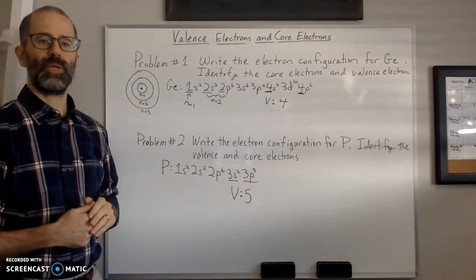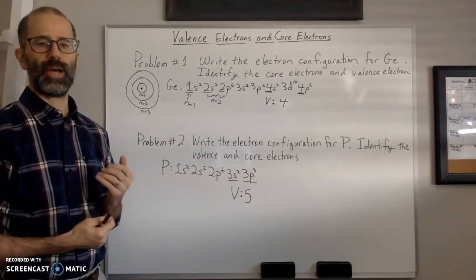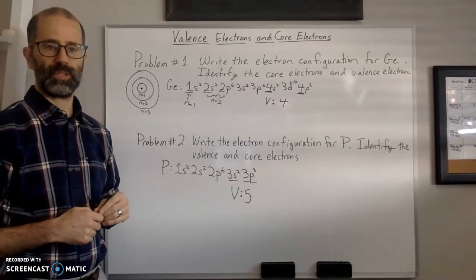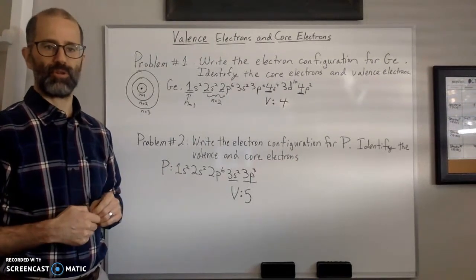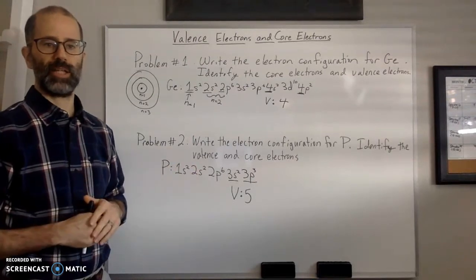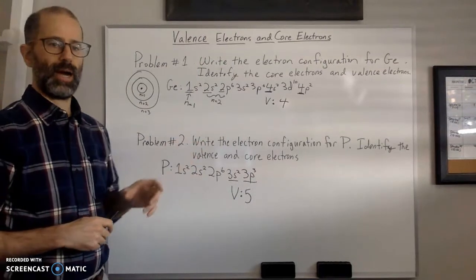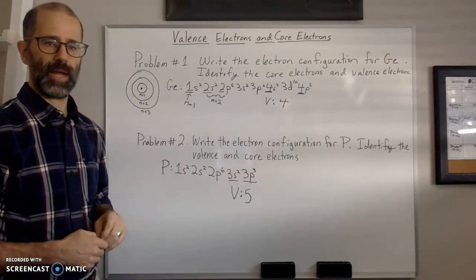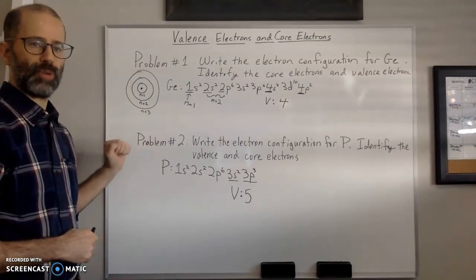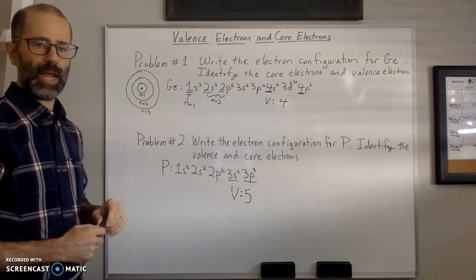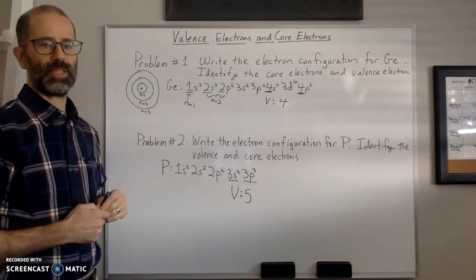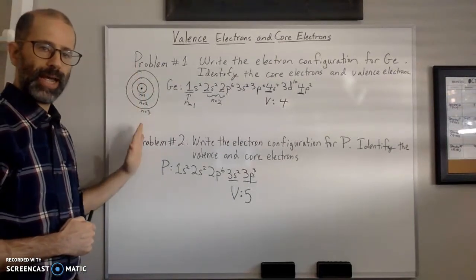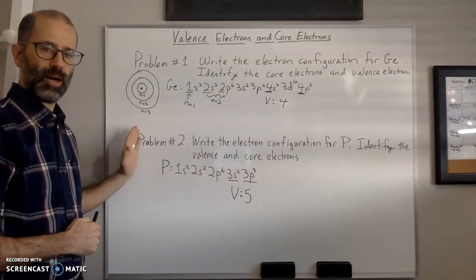You should also be able to identify the number of valence electrons from the periodic table. The number of valence electrons is always equal to the group number for main group elements. Main group elements are the non-transition elements — the two groups on the left (groups 1 and 2) and the six on the right side of the table, giving eight groups total. They usually have an 'A' designation: 1A, 2A, 3A, 4A, and so on.